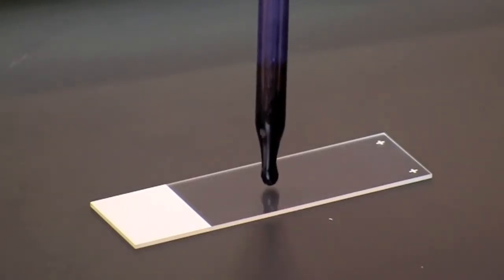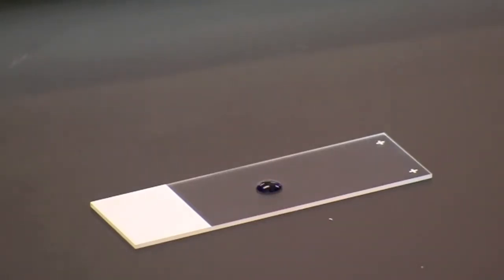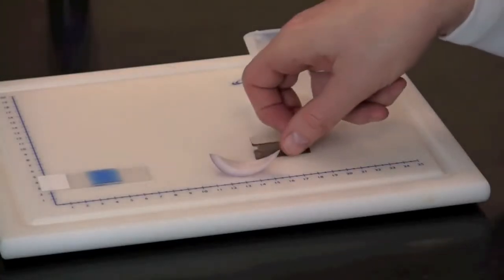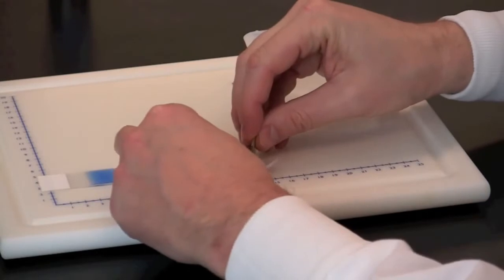To make a wet mount of onion cells, place a drop of fast blast DNA stain on a microscope slide. Take a small piece of onion.